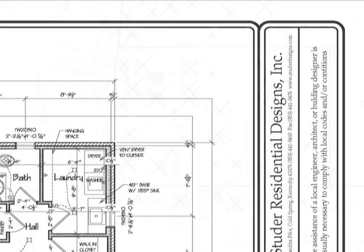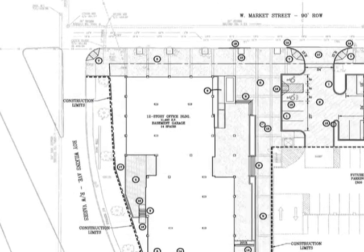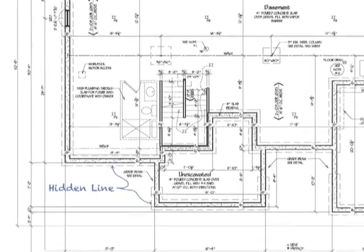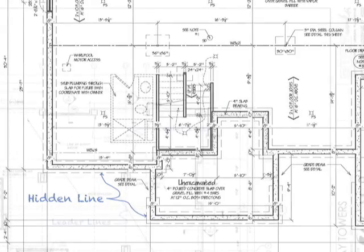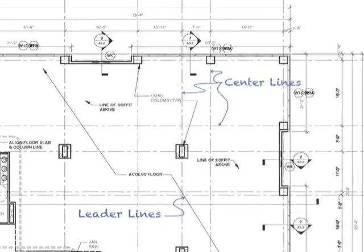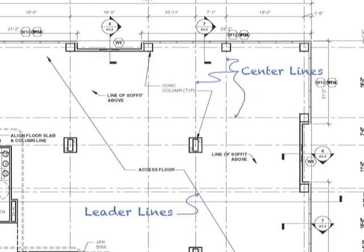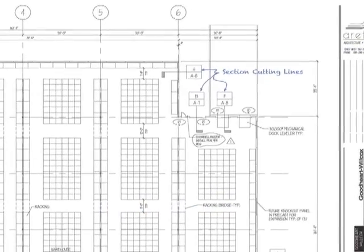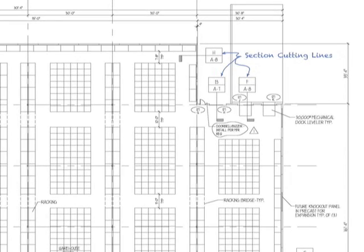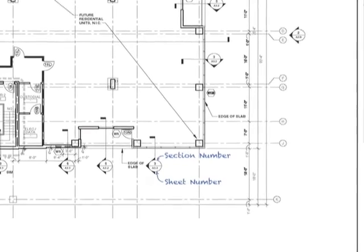Border lines define the edge of the drawings — usually the heaviest lines on the drawings. Property lines define the edges of the property lots. Object lines outline the building and the edges of objects, lighter than border and property lines. Hidden lines show object edges behind other objects. Center and leader lines are used to show intersections and refer to notes of objects on the plans.